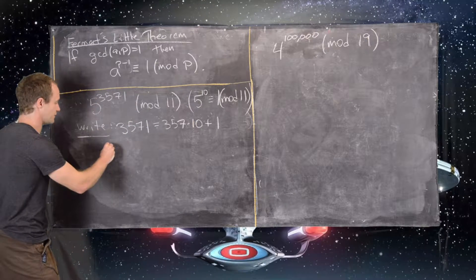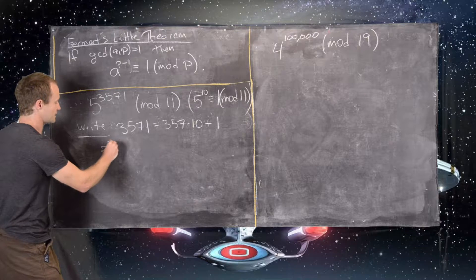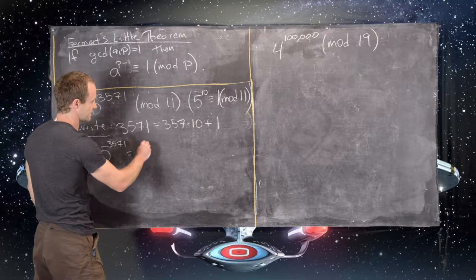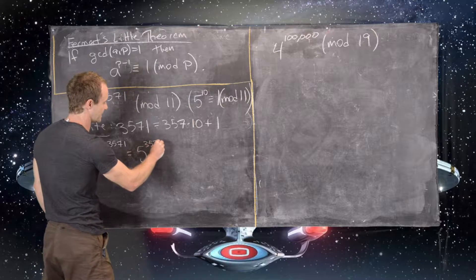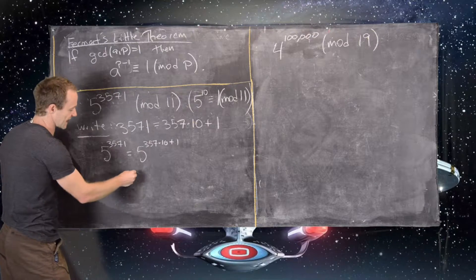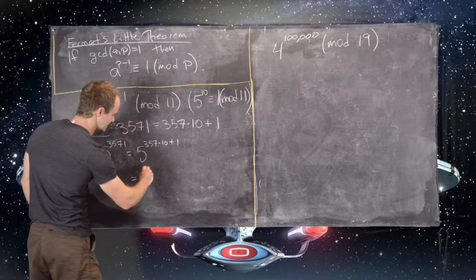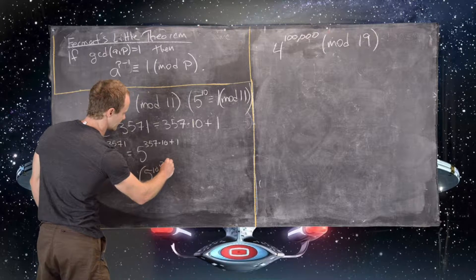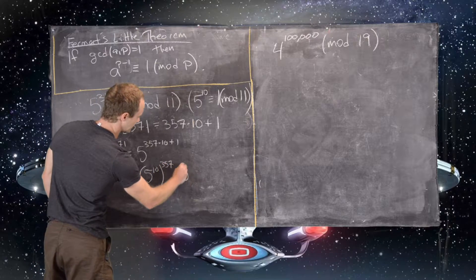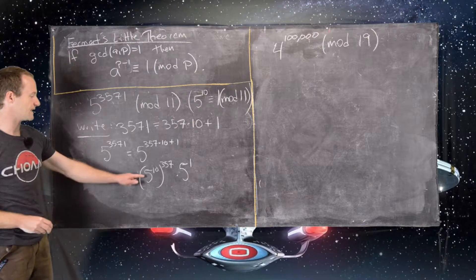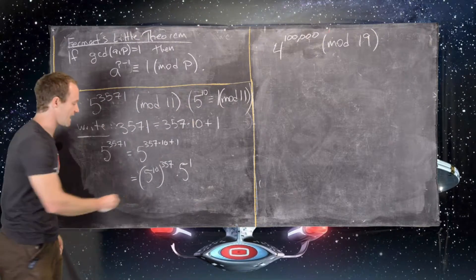And now what we'll do is we'll say 5 to the 3571, so that will be equal to 5 to the 357 times 10 plus 1. And now we can use exponent rules to simplify this. So that's 5 to the 10 power to the 357 times 5 to the first power. But again, we know that 5 to the 10 is 1.